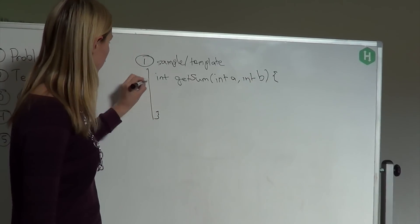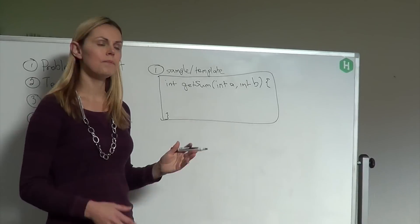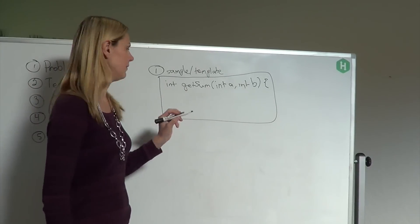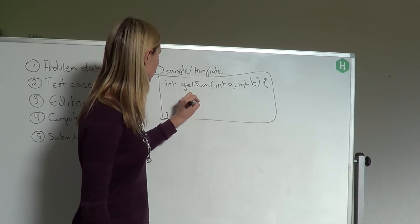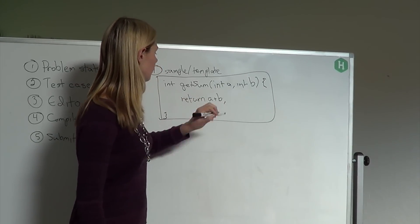Int getSum, int a, int b, and then this. So your editor window has this in it. In this case, your responsibility is just to fill this in. So you'd write, of course, just return a plus b.